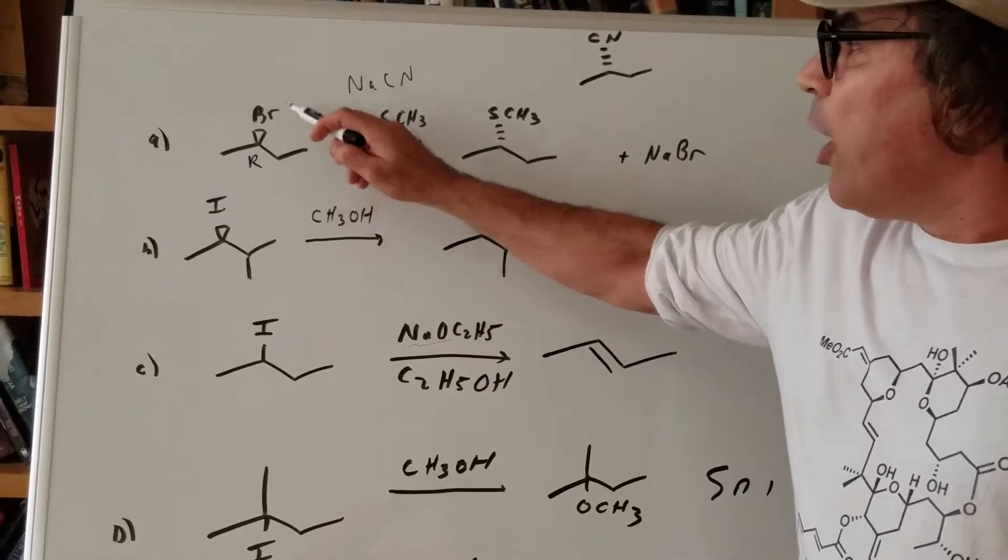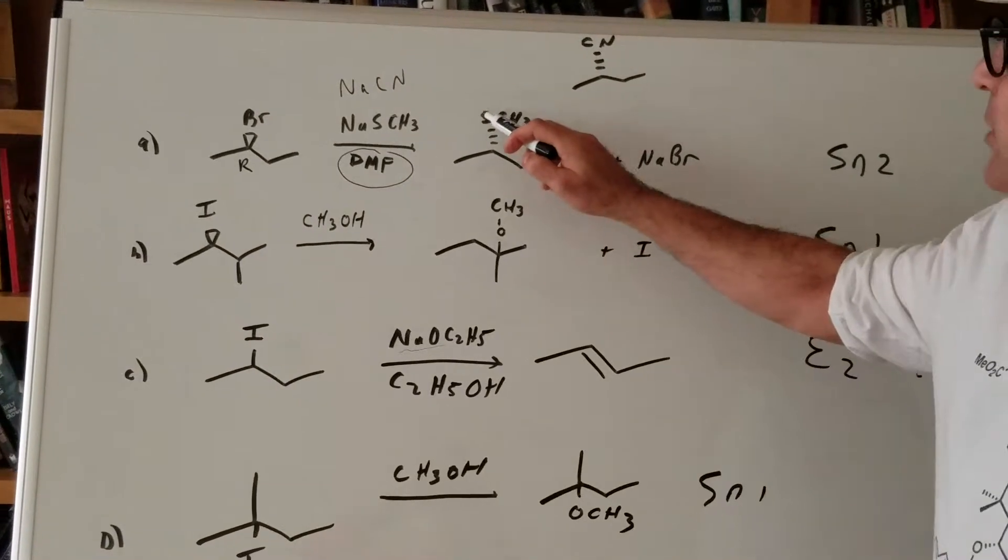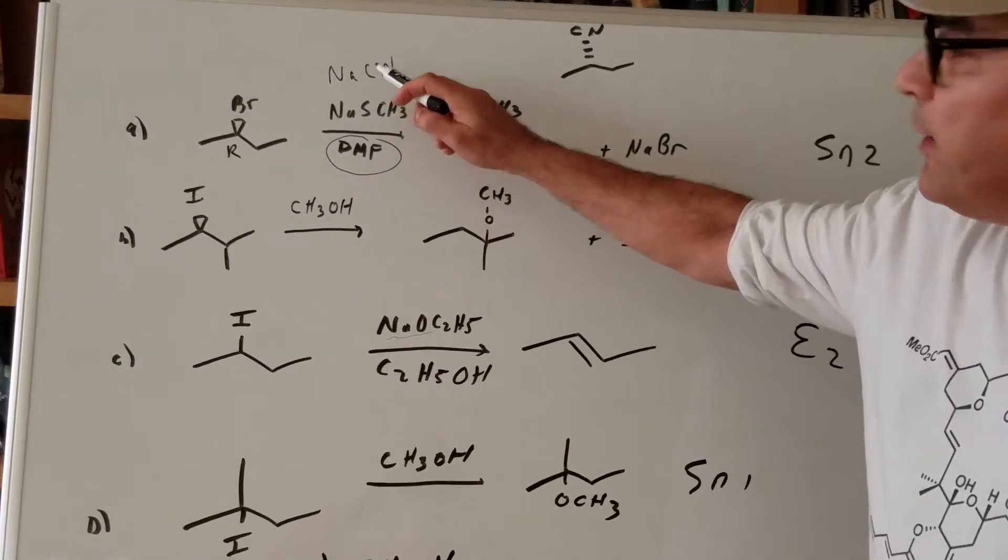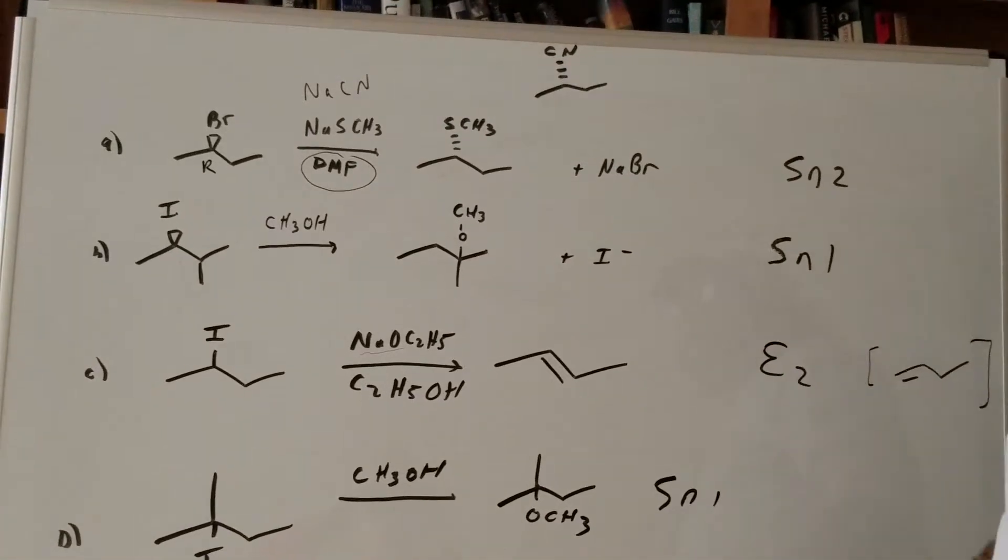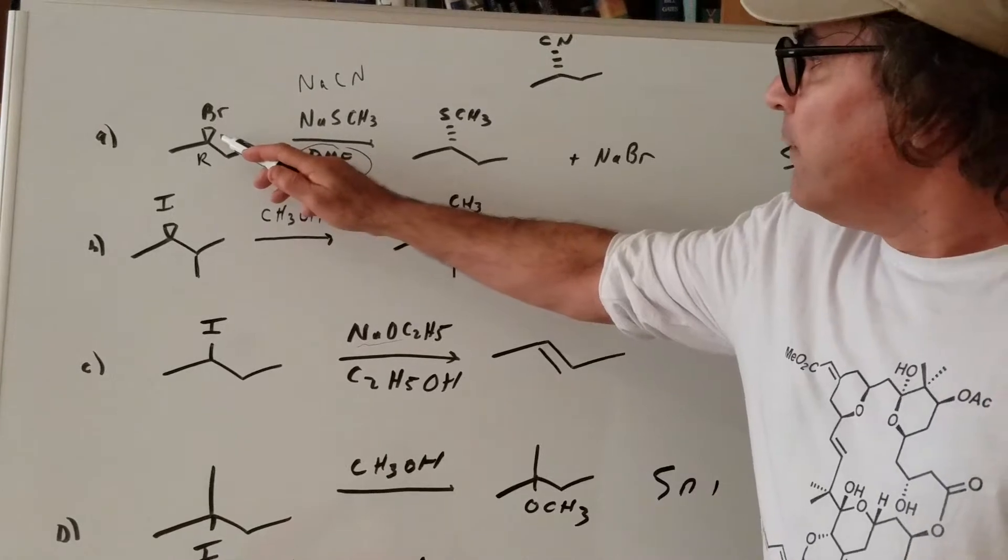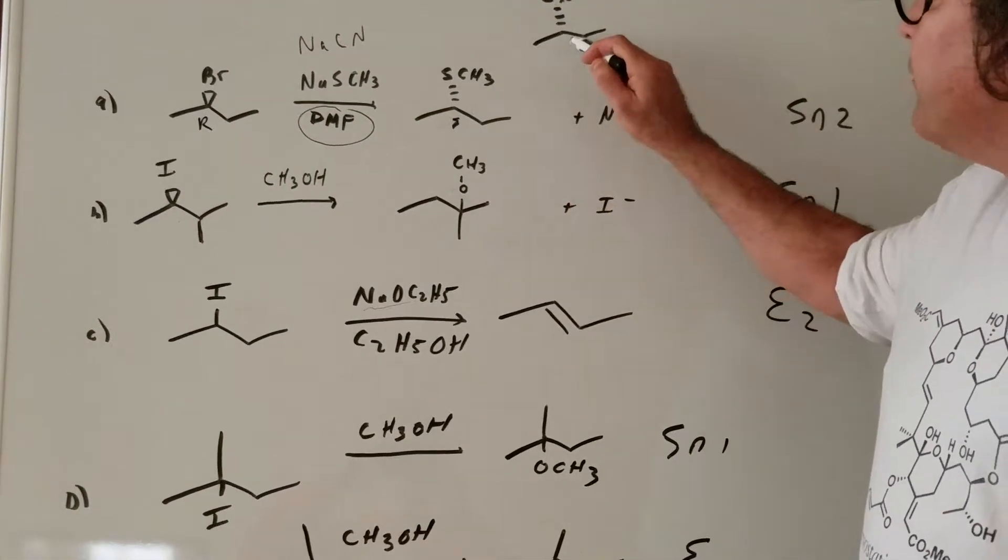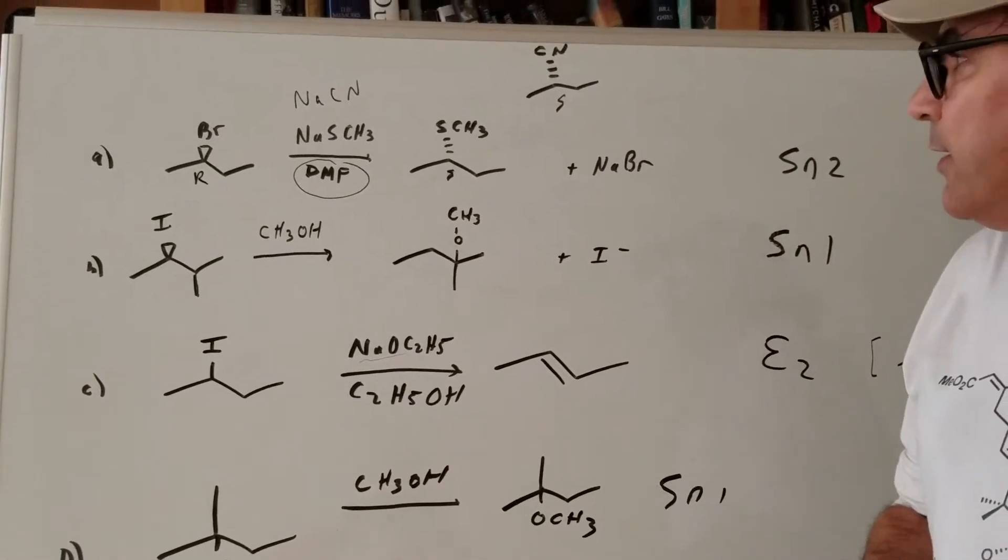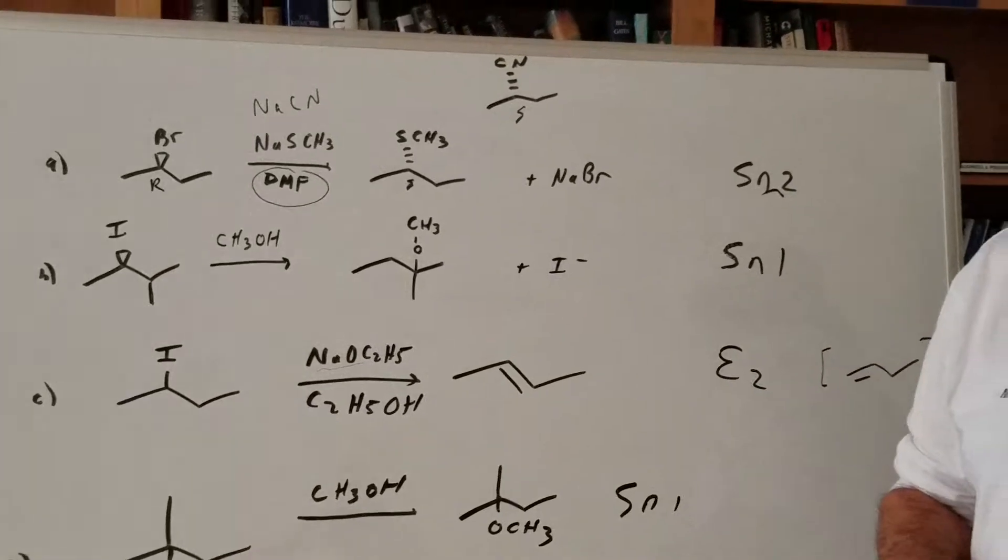So as you can see, the bromine group here has been replaced with an SCH3, or if you would have used NaCN, you would have replaced it with a cyanide group. Now notice the key thing. You would have gone from an R and both of these have the configuration of S. So we did an inversion. We did an inversion in the SN2 reaction because we attacked it from the backside.